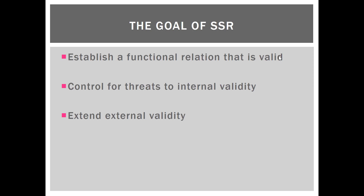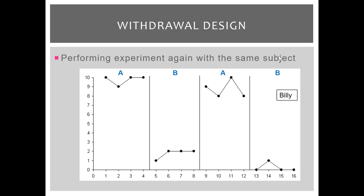Let's recap. What is the goal of single subject research? We want to establish a functional relation or make a causal inference that is valid. To do that, we need to control for threats to internal validity. When we do that, we can extend our external validity. Let's look a little bit deeper at what this means and what this looks like.